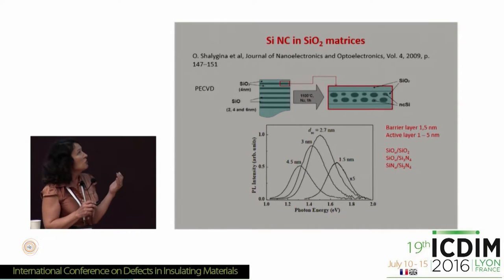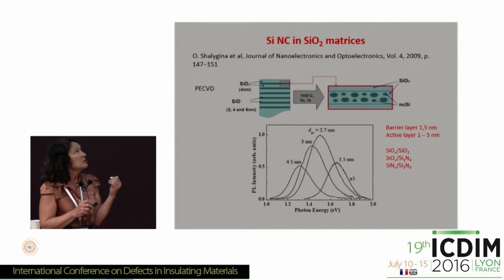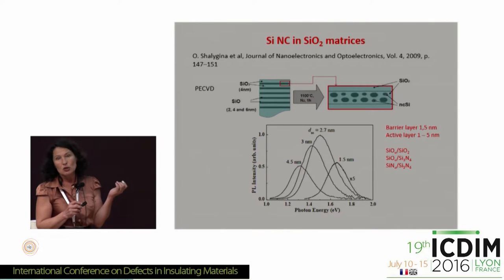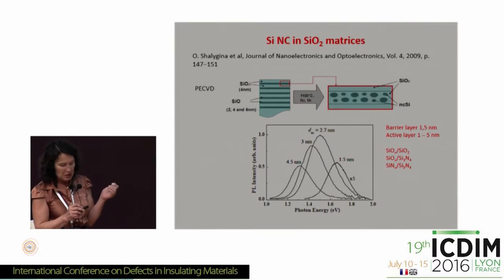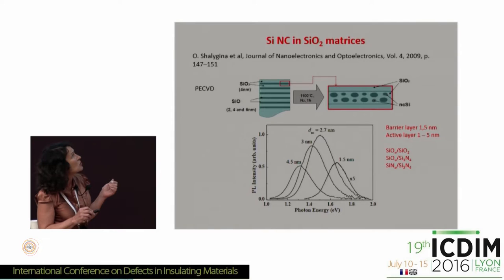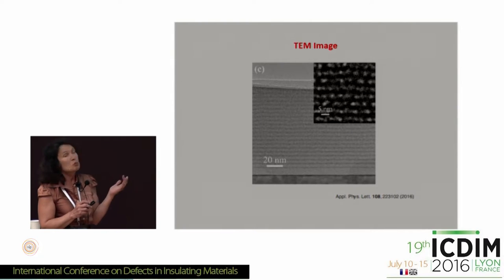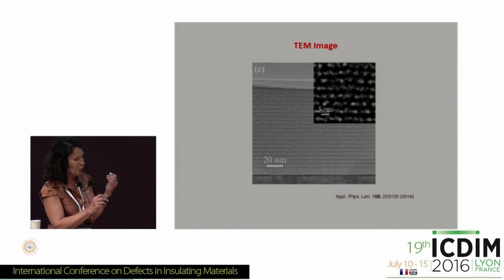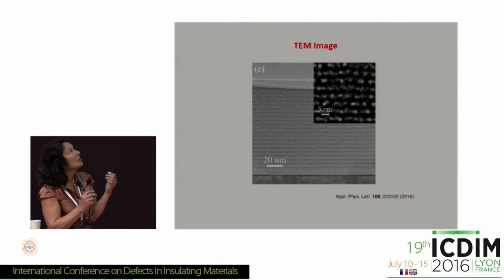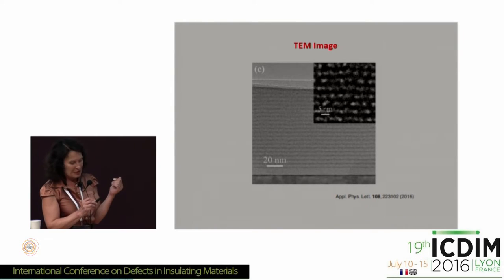We observe a shift of the center of the luminescence band toward higher energy with decreasing nanoparticle size. TEM images prove that indeed we get alternating layers with silicon nanoparticles inside.